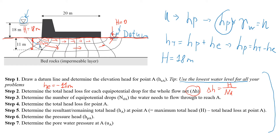To find the number of drops, we use the flow channel in the middle and count the equipotential drops: one, two, three, four, five, six, seven, eight, nine — so we have nine drops. Delta h equals the maximum total head of 18 divided by 9, which gives us 2 meters per drop.